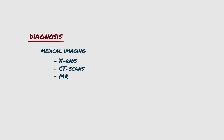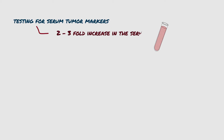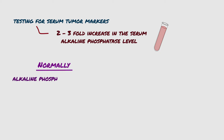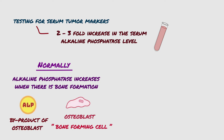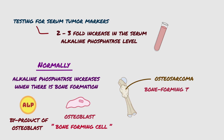The diagnosis of bone tumors starts with medical imaging like X-rays, CT scans, and MRI imaging, or testing for serum tumor markers specific to each type of tumor. For example, there may be a two- or three-fold increase in the serum alkaline phosphatase level. Alkaline phosphatase increases when there is bone formation because it is the byproduct of osteoblast activity. Because osteosarcoma is a bone-forming tumor, there is an increase in serum alkaline phosphatase level in osteosarcoma patients.